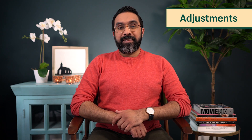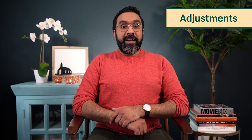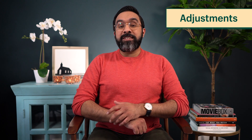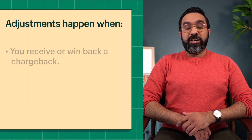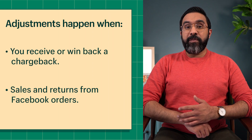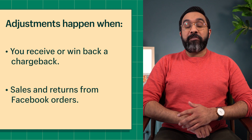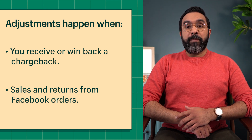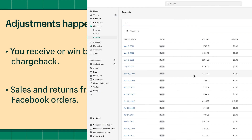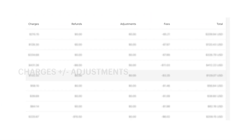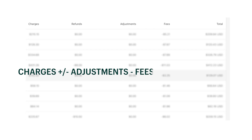Occasionally, you might see an amount in the adjustments column of your payouts. Adjustments are additions or subtractions to your payouts that occur when changes are needed to your payout total. Adjustments might happen after winning a chargeback or from sales and returns from Facebook orders. After all these fees and adjustments are considered, your final payout amount is calculated. Adjustments are added or subtracted from your charges, then any additional fees or refunds are also subtracted. This gives us our final payout amount.